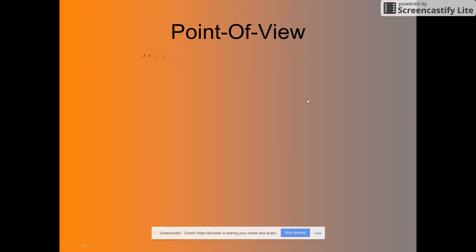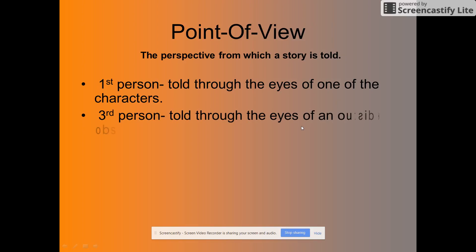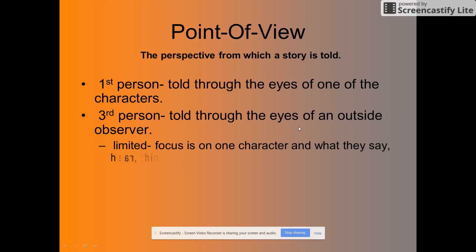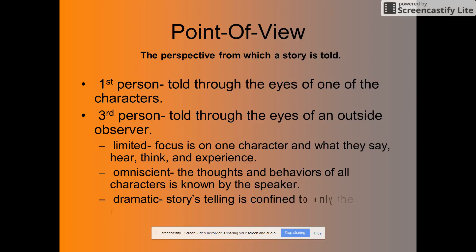Next let's talk about point of view — the perspective from which a story is told, essentially who is our narrator. In first person point of view, it's told through the eyes of one character and you will see the pronouns I and me. In third person, it's told through an outside observer and there are two types: limited, which focuses on one character's thoughts, actions, and words; and omniscient, meaning all-knowing, where we get the thoughts, behaviors, and views of every character. There's also dramatic third person, like a play, where you get the reporting and dialogue of all characters. Second person uses the pronoun "you," but not much literature is written this way except choose-your-own-adventure novels.